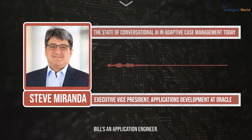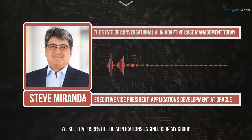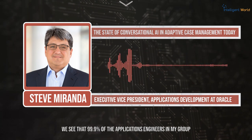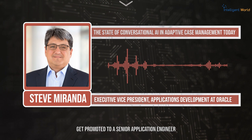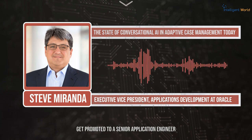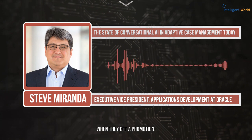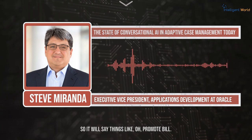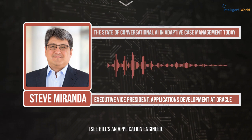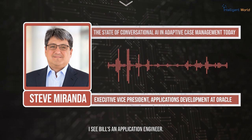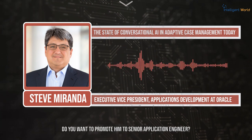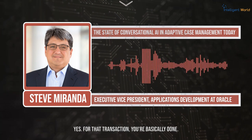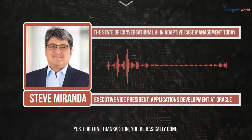Bill is an application engineer. We see that 99.9% of the application engineers in my group get promoted to a senior application engineer when they get a promotion. So it will say things like, 'promote Bill — I see Bill's an application engineer. Do you want to promote to senior application engineer?' Yes. For that transaction, you're basically done.